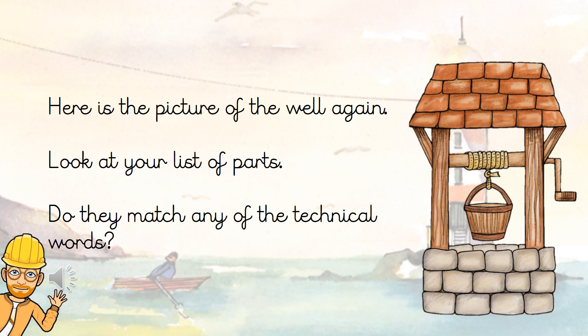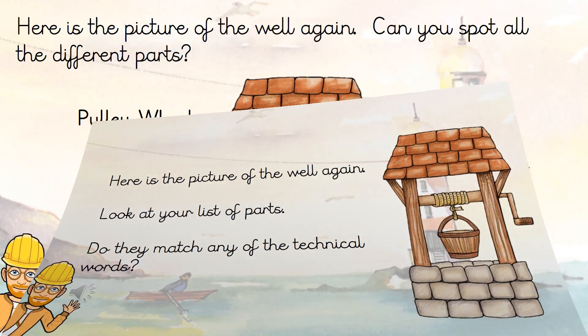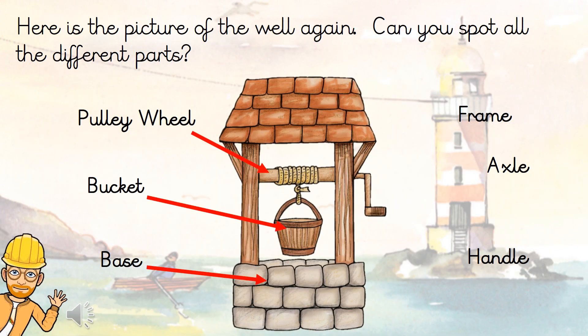Here's the picture of the well again. Look at your list of parts — do they match any of the technical words we used? The well has a pulley wheel, a bucket, a base, a frame, an axle, and a handle.